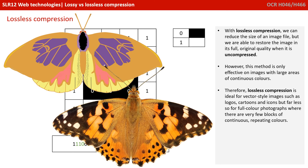However, this method is only effective on images that have large areas of continuous colours. Therefore, lossless compression is ideal for any vector style images — things like cartoons, logos and icons. But it becomes far less effective for full colour photographs, where there are very few blocks of continuous, repeating colour.